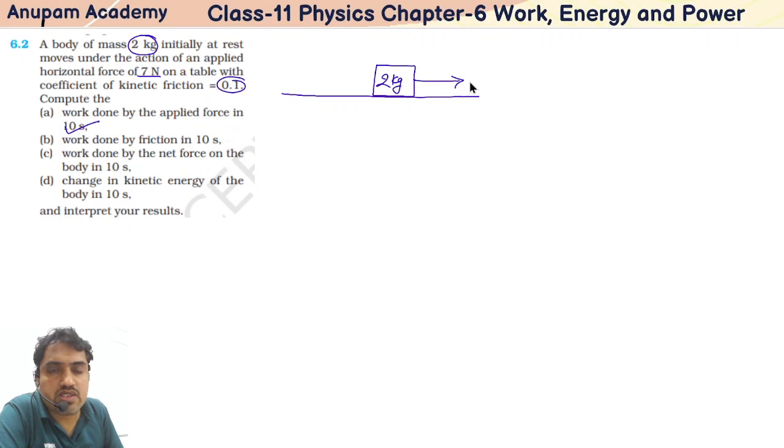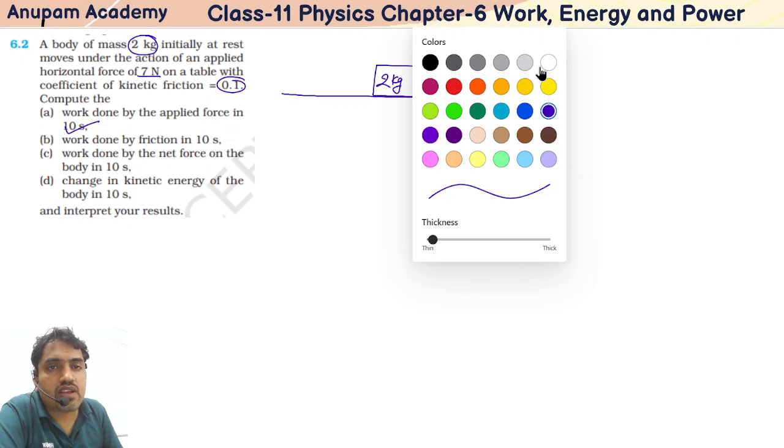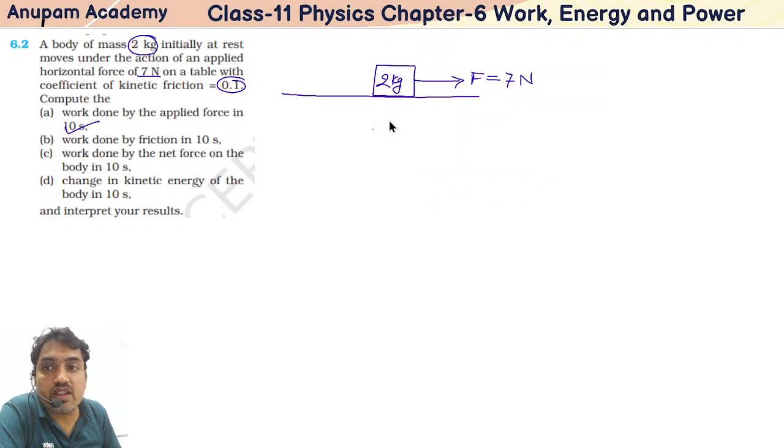Now we are applying force on this, a horizontal force F of 7 Newton. And definitely it is a rough table, so the friction force is acting. Coefficient of friction 0.1 is given, so friction force is acting in backward direction.